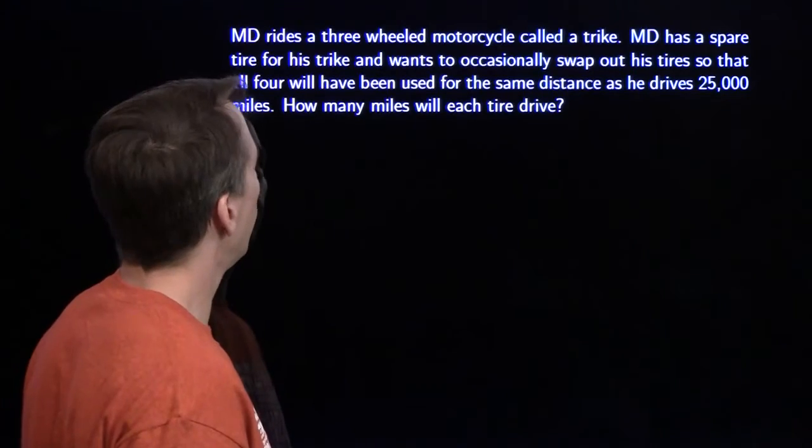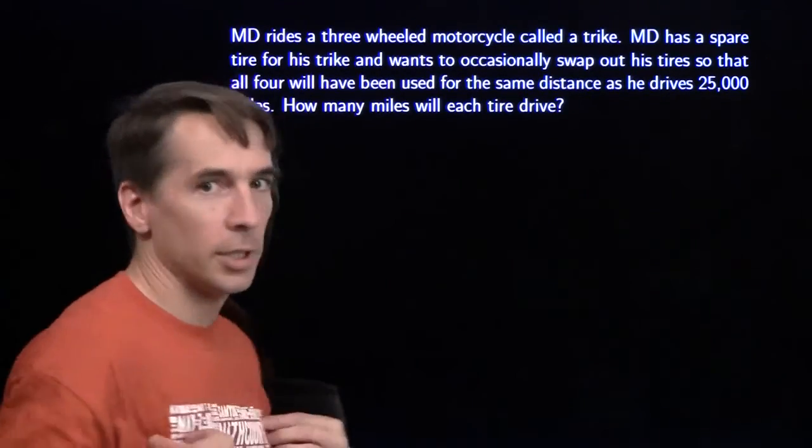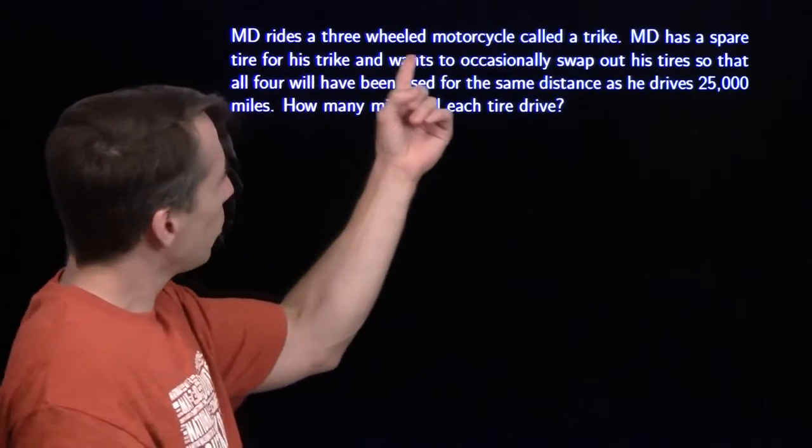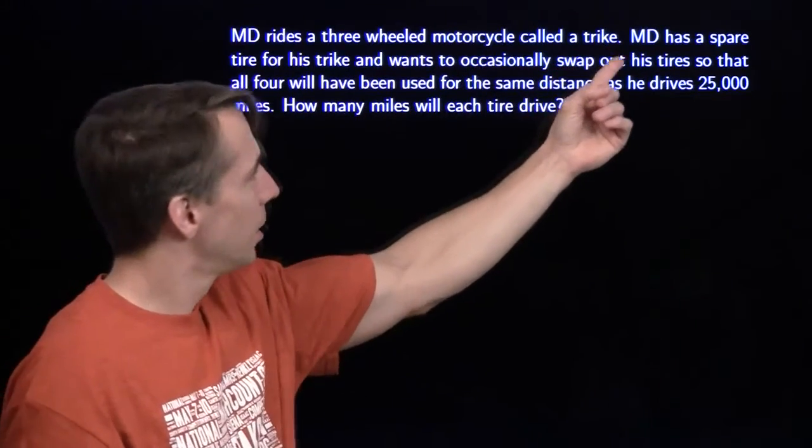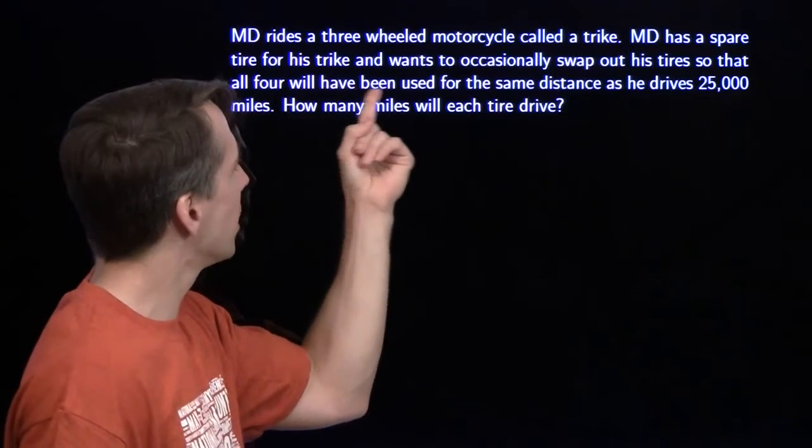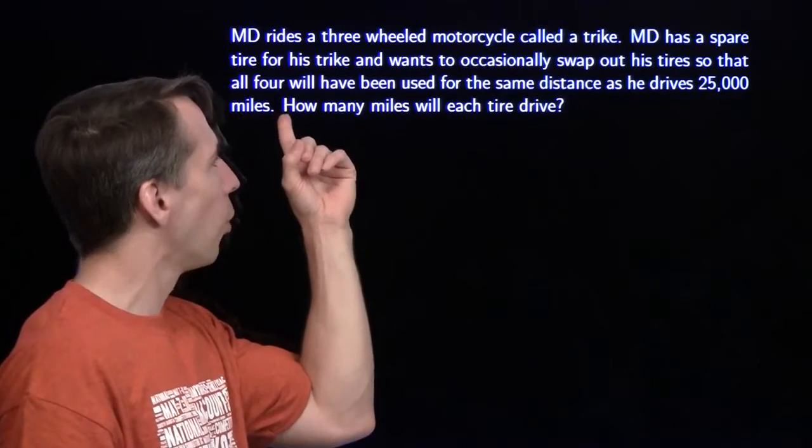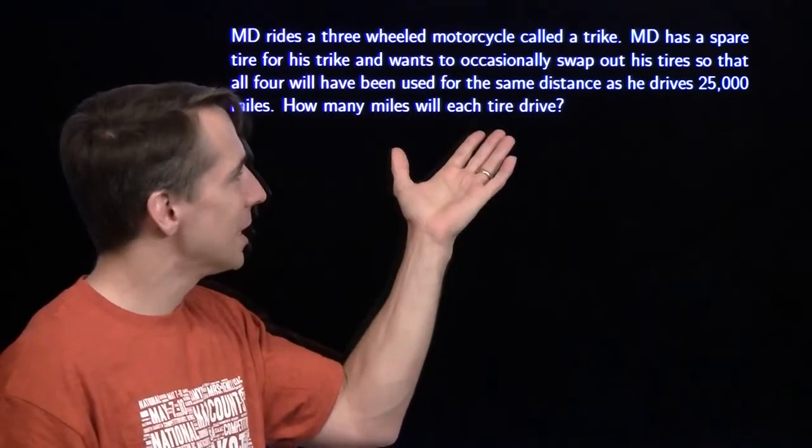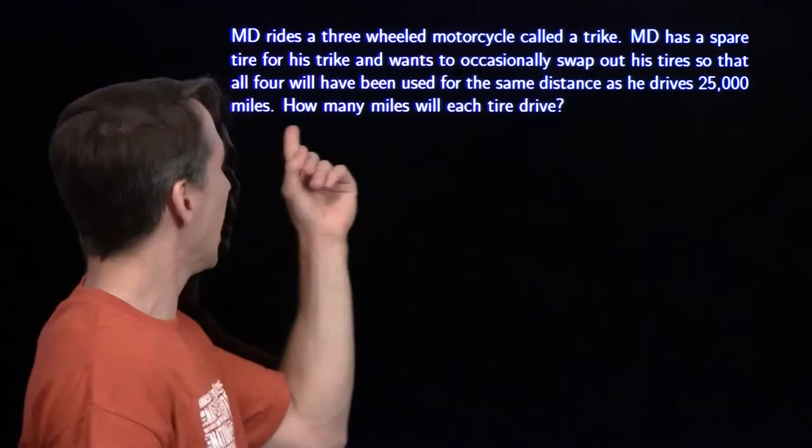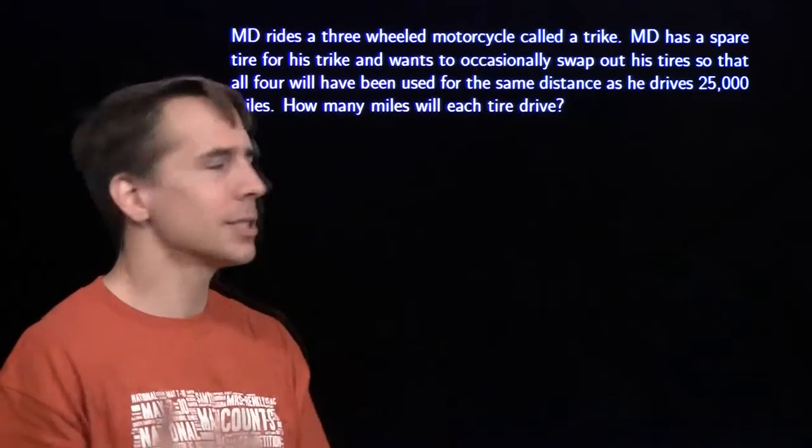Let's see what we can do here. More words. MD rides a three-wheeled motorcycle called a trike. MD has a spare tire for his trike, so I guess that means he has four tires. He wants to occasionally swap out his tires so that all four will have been used for the same distance as he drives 25,000 miles. That's a long time on that trike. How many miles does each tire go?